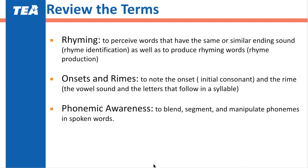The fifth term is rhyming — the ability to perceive words that have the same or similar ending sounds, including identification and production of the sound. Onset and rhyme is the initial consonant, the vowel sound, and the rest of the letters that follow in a syllable. The last term is phonemic awareness — the ability to blend, segment, and manipulate phonemes in spoken word.